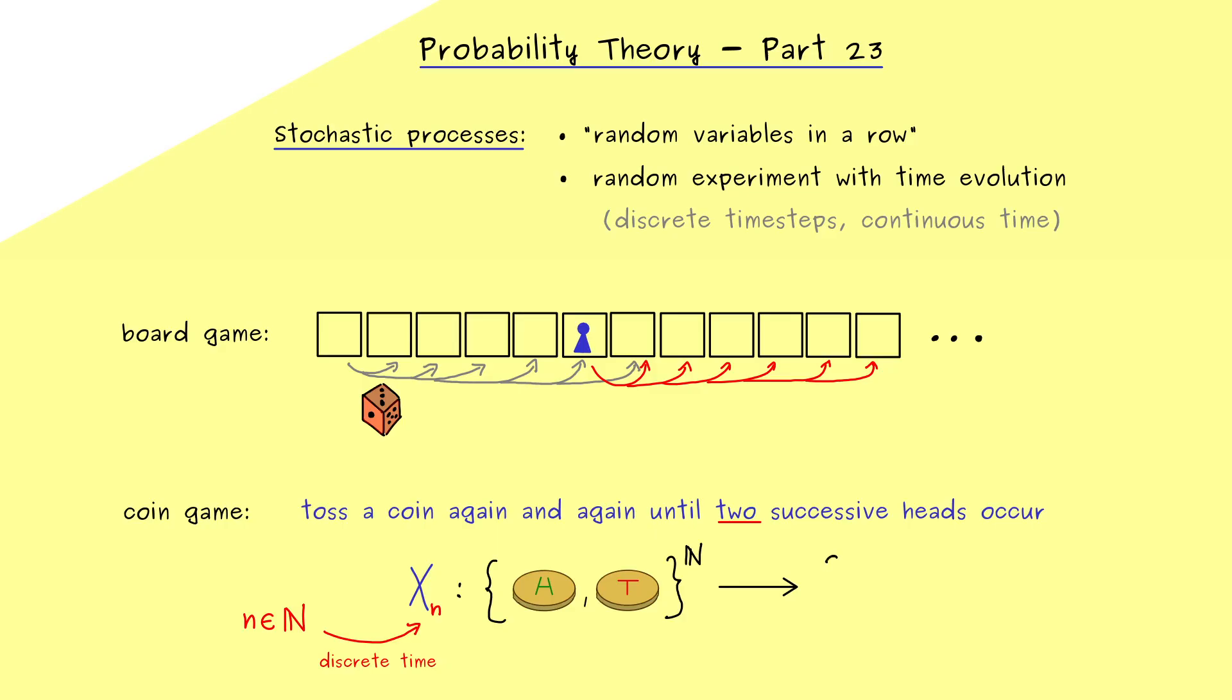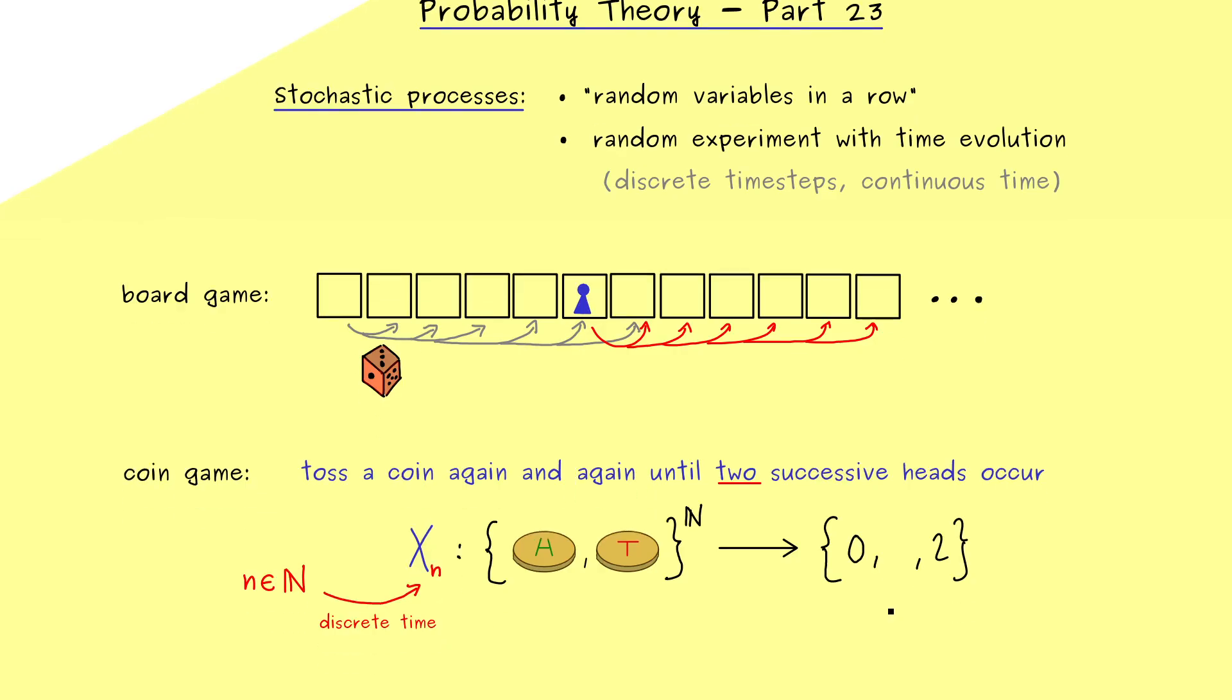And indeed this is the correct domain for our random variable because our sequence could have infinitely many members. But in addition we also have the question what is the codomain of this random variable. And at this point our parameter lowercase n comes into the game. In fact it means after n coin tosses we want to check if we finish the game.